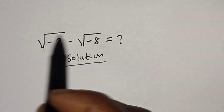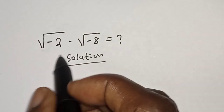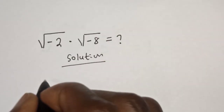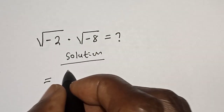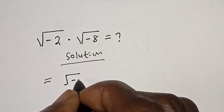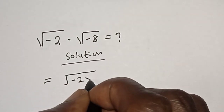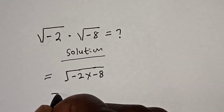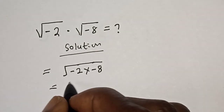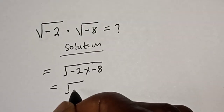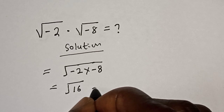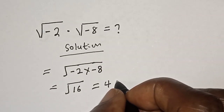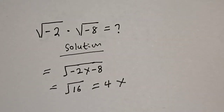If you see questions like this, a lot of people will think that you are going to get a straight answer. Let's see how possible that is. Square root of minus 2 multiplied by square root of minus 8 is equal to square root of minus 2 times square root of minus 8. That is square root of 16, which is equal to 4. Is that the correct answer? This is very wrong — it is not the correct answer.